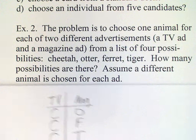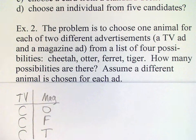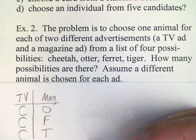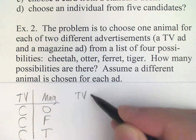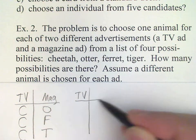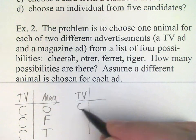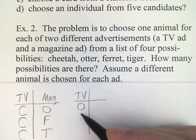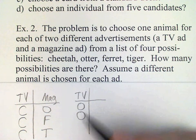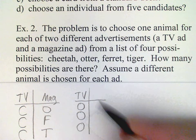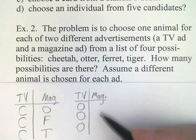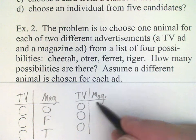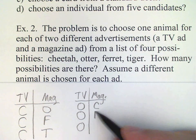But then we could choose each of the other three animals for TV. So the otter could be on TV, and then for each of the other three animals, they could be in the magazine ad: cheetah, ferret, and tiger.